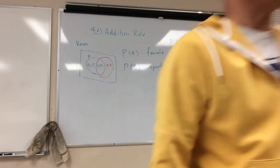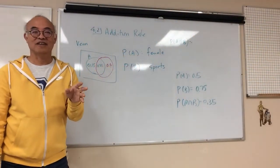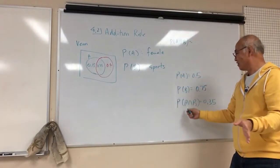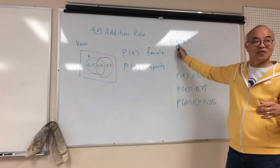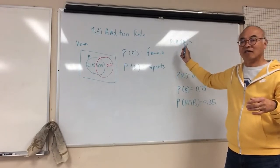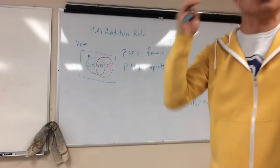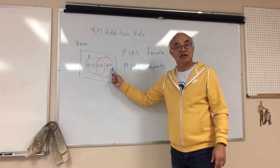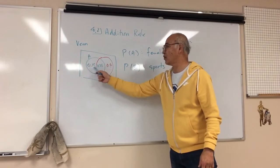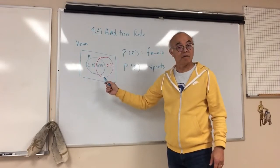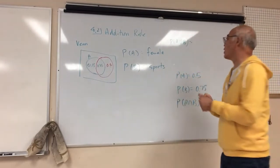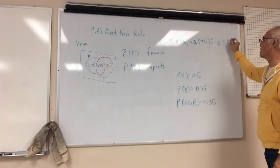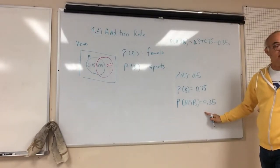So again, what am I trying to find out? How many people are girls or play sports? So I'm going to add these three together, correct? What do I get? I get 0.9. So this is the way you're going to calculate that. The way you're going to calculate is you're going to add the two and then you're going to subtract this guy.